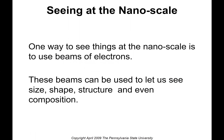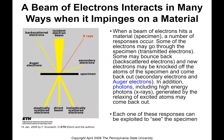One way to see things at the nanoscale is to use beams of electrons. These beams can be used to let us see size, shape, structure, and even composition. A beam of electrons interacts in many ways when it impinges or hits a material. When a beam of electrons hits a specimen, a number of responses occur.